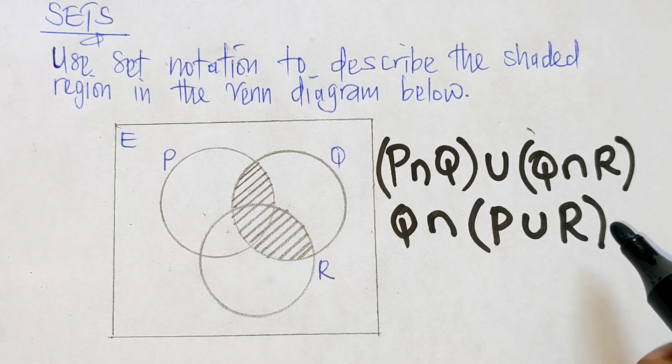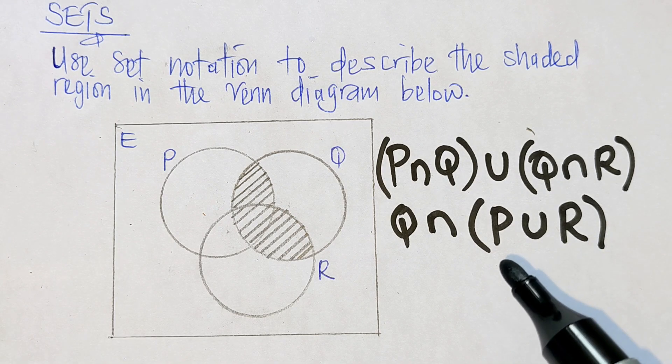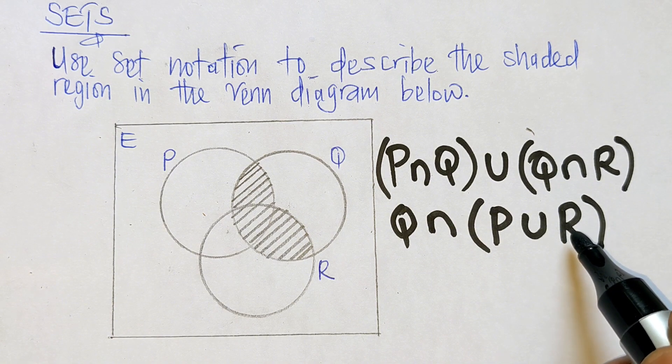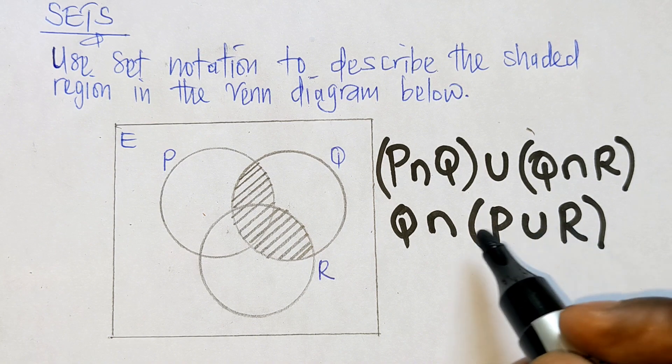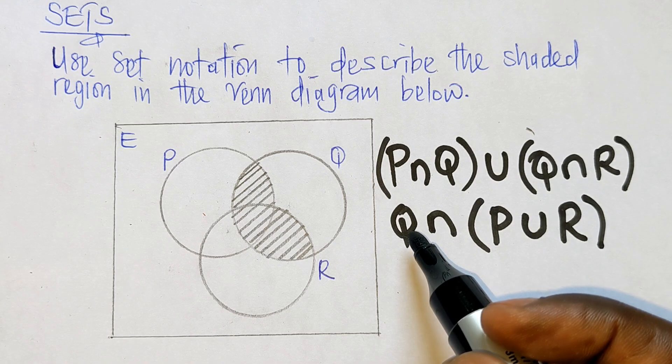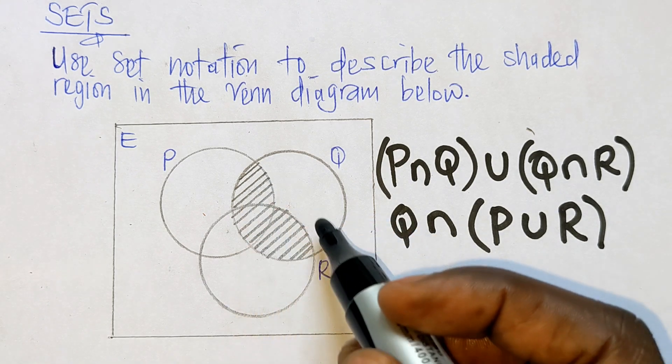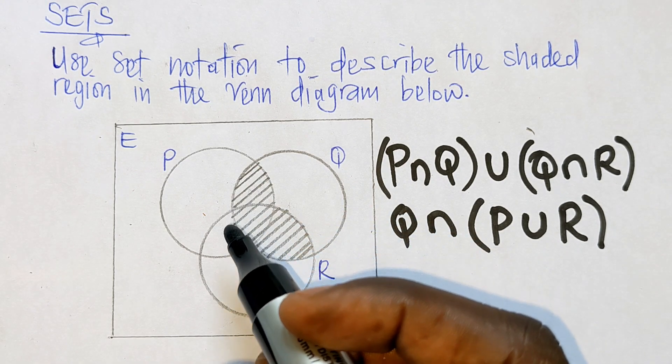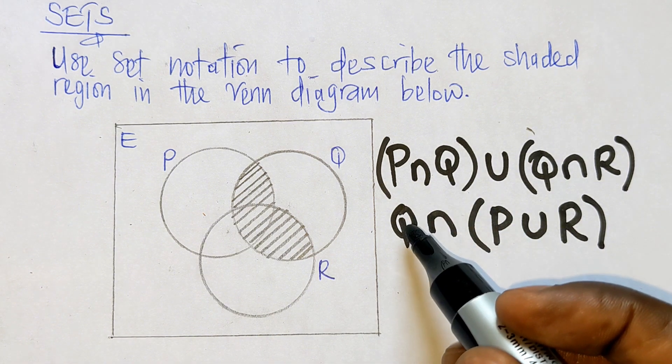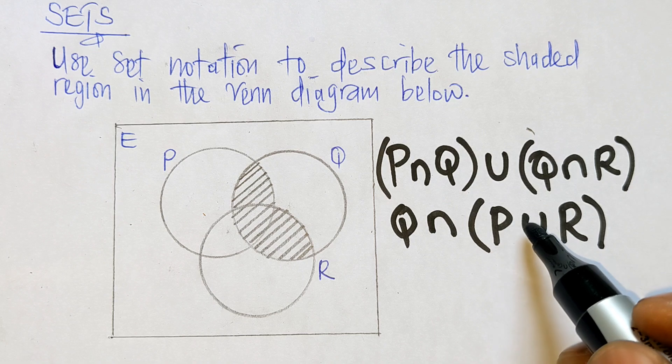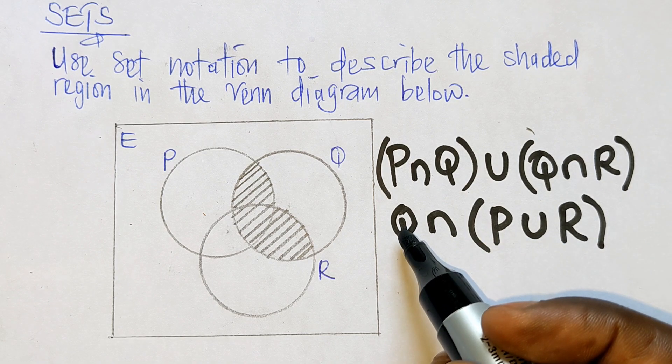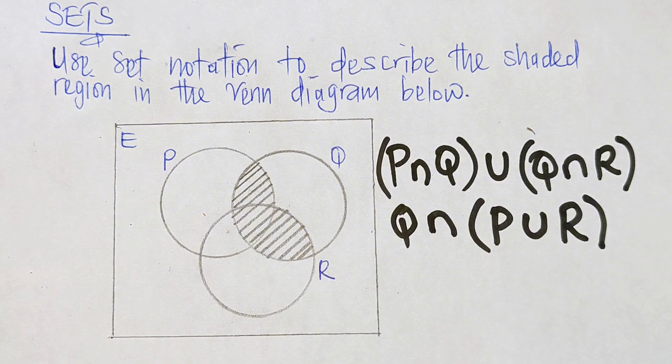So when you take the union of P and R and intersect it with Q, you simply get the shaded region here. This is the elements that are common to both P∪R and the set Q. So this here is the result and this here is our answer.